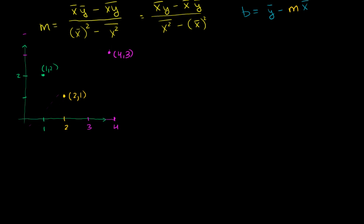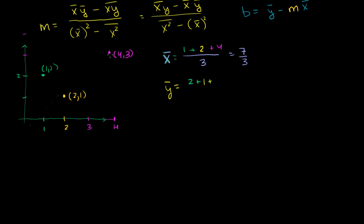A good place to start is to calculate these quantities ahead of time and substitute them into the equation. The mean of our x's is going to be (1 + 2 + 4) / 3. That's 7/3. The mean of our y's is equal to (2 + 1 + 3) / 3. That's 6/3, which equals 2.